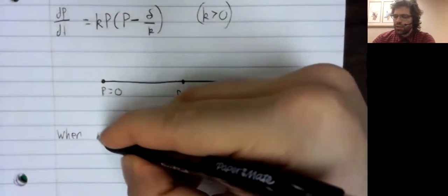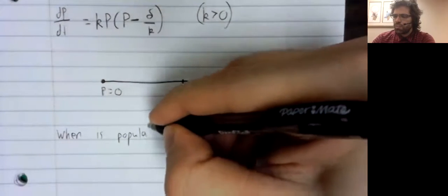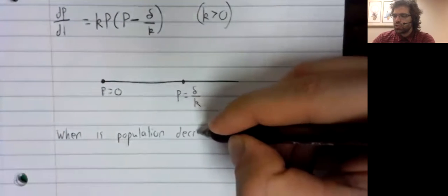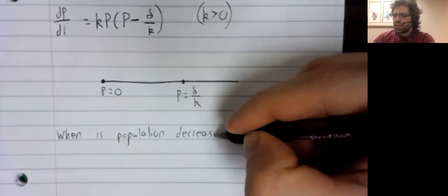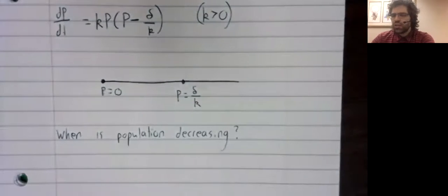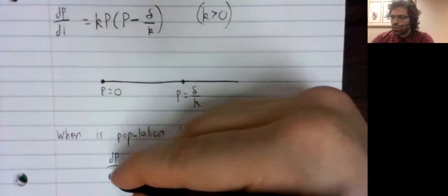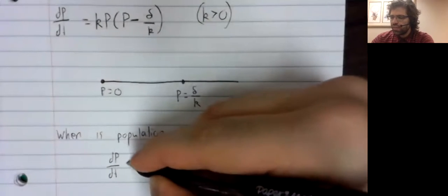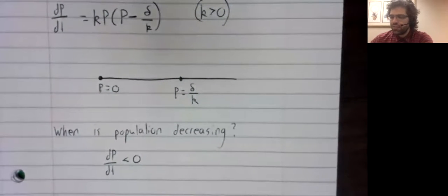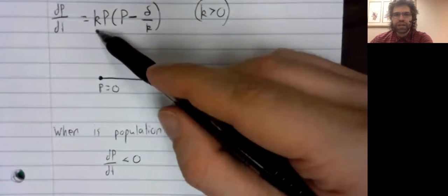When is the population decreasing? The population is decreasing, according to calculus, when the derivative is negative. And the derivative is equal to this expression.